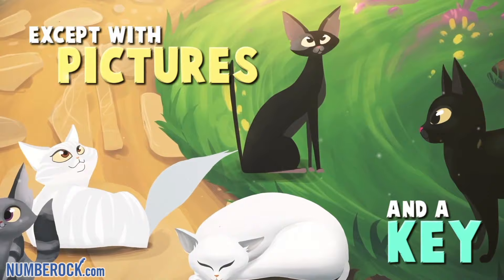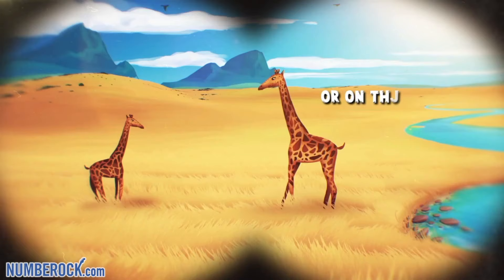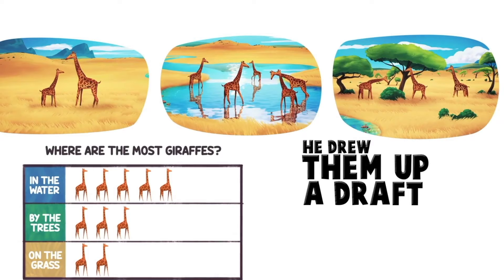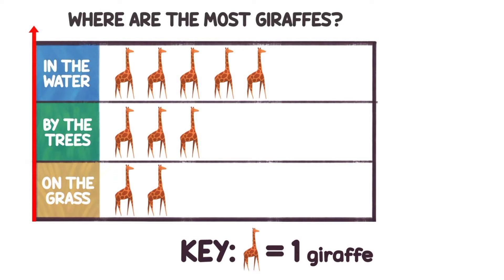The safari guide was asked where are the most giraffes — in the water, by the trees, or on the grass? He drew them up a draft of a picture graph and that's what we're looking at. One axis on the graph shows the number of giraffes, the other tells us if they're in the water, by the trees, or on the grass.